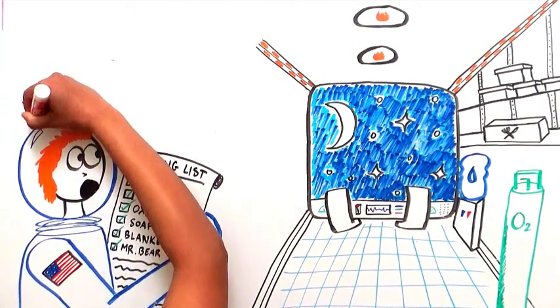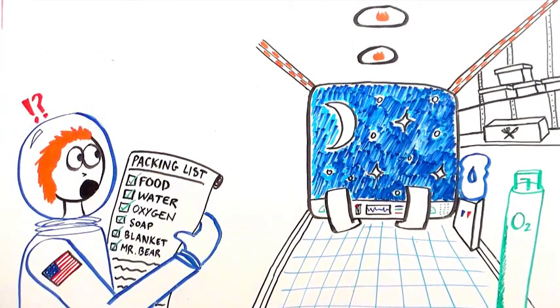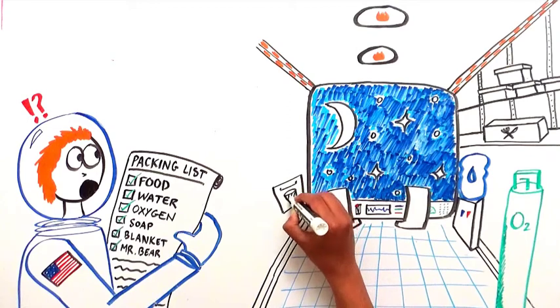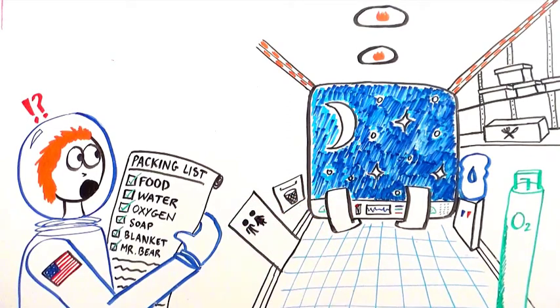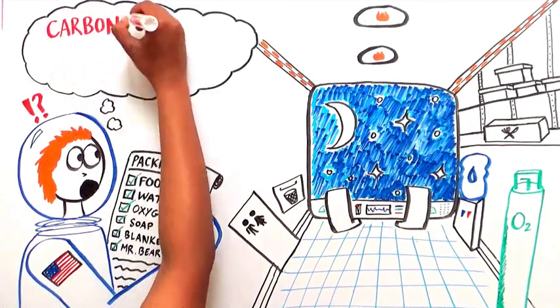But wait! What about all the waste you will produce? In addition to making sure there's a trash disposal and a bathroom on board, there is one more major source of waste that needs to be dealt with: carbon dioxide.